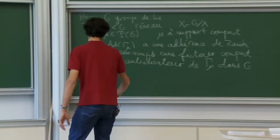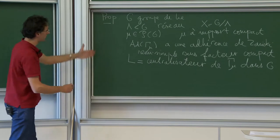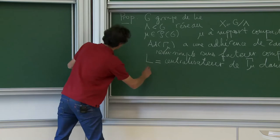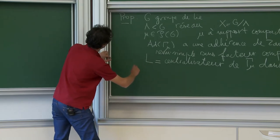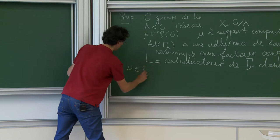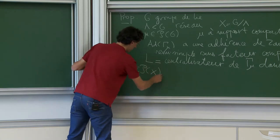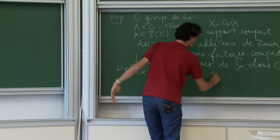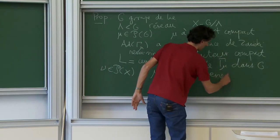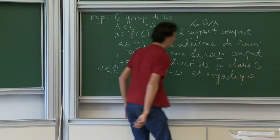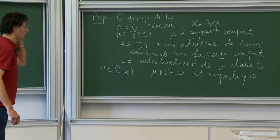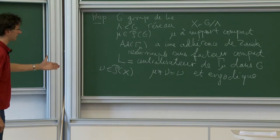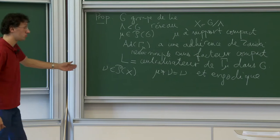Now the hypotheses are long. I take ν, a probability measure on X, which is μ-stationary and ergodic — that is, an extremal point in the convex set of stationary probabilities. Under these hypotheses — and this is the main theorem I demonstrated during the first session — my goal is to show that ν is homogeneous.